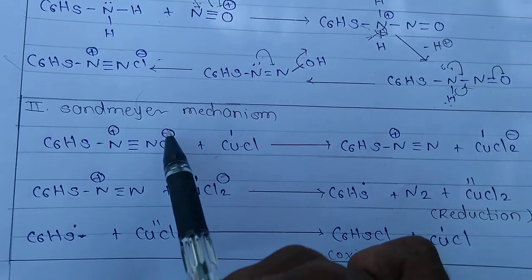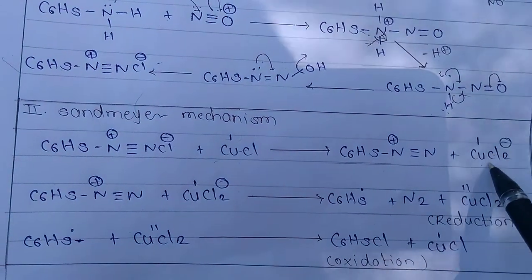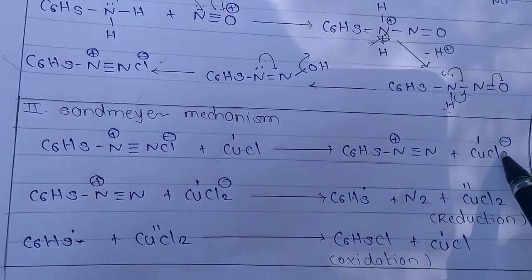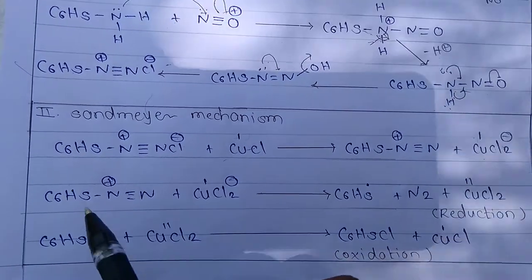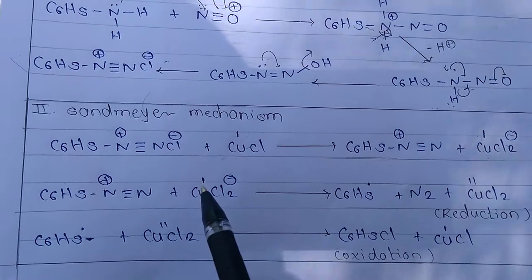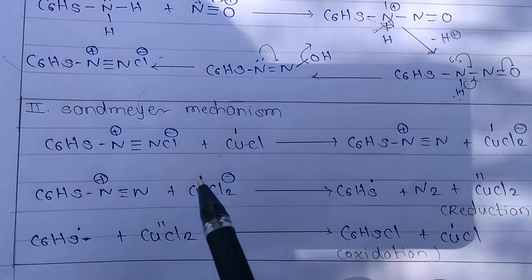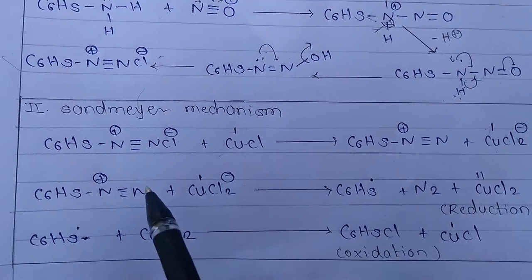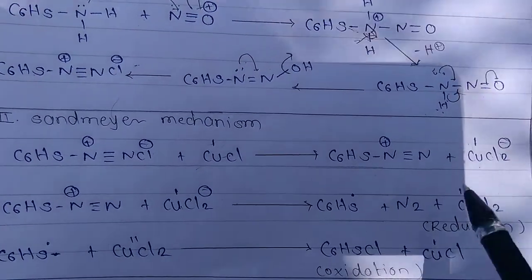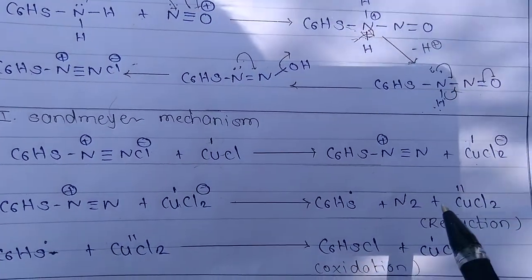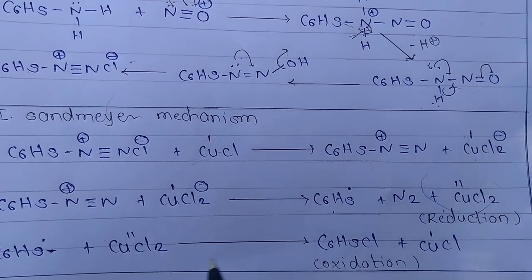CuCl in the +1 oxidation state takes Cl minus, and the C6H5N2+ reacts accordingly. The cuprous copper then forms the aryl radical. CuCl2 acts as a reducing agent — it reduces the diazonium species and is itself oxidized to give Cu2+.